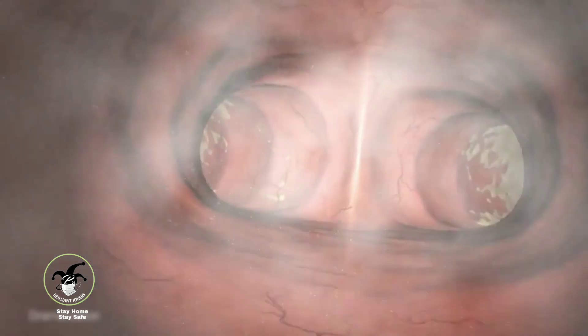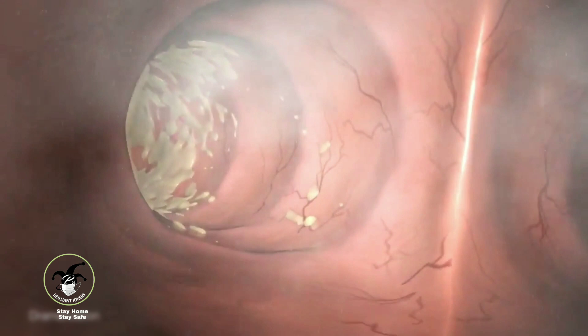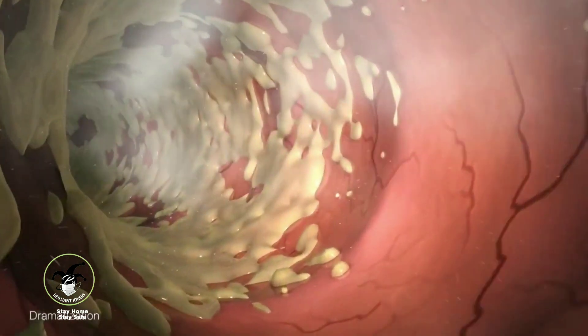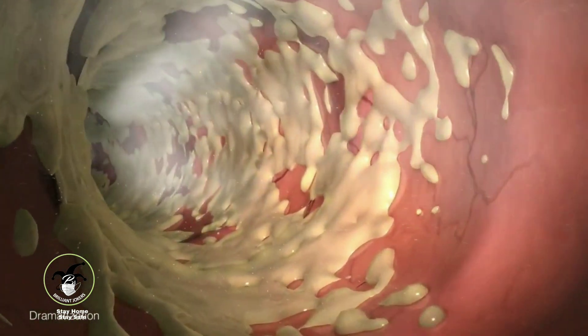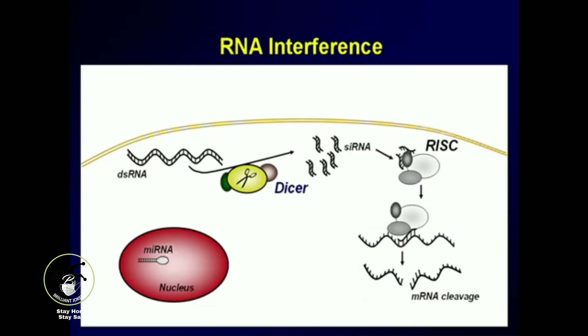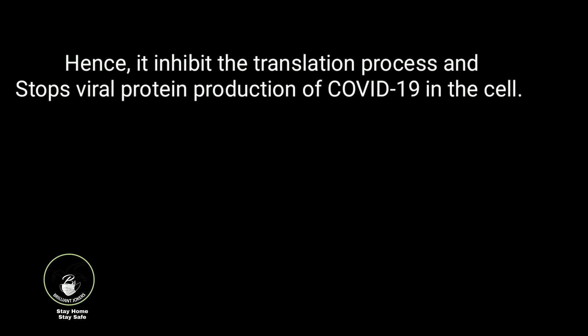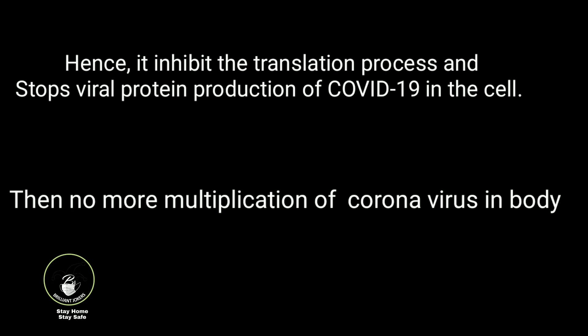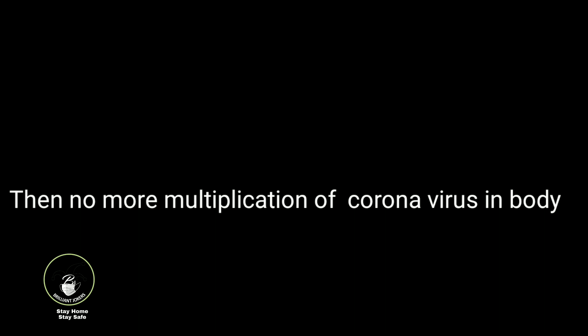The powder is loaded in a nebulizer. Once it is inhaled by mouth, it goes and binds to the target viral mRNA and stops the translation process. Hence, the viral proteins M protein, N protein, E protein, and S protein cannot be produced, and no more multiplication of coronavirus is possible in our body. Thank you for watching.